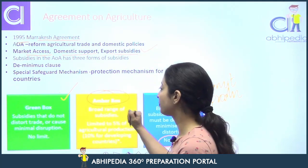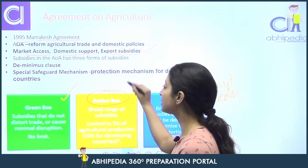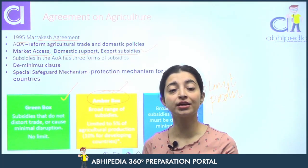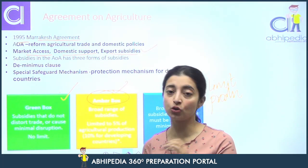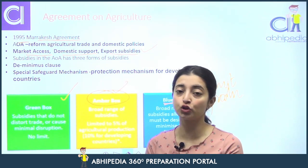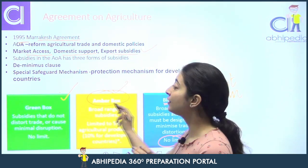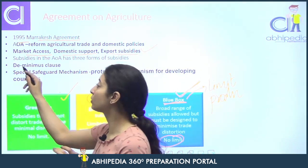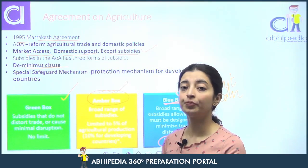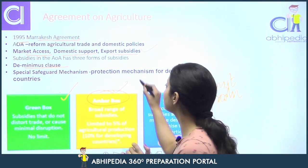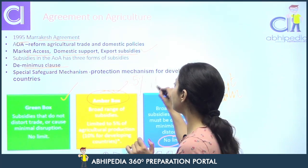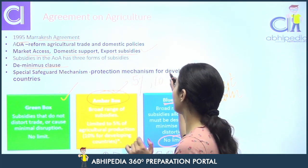Amber box subsidies kaunsi hoti hain? Amber box subsidies are those subsidies which are considered trade distorting by WTO. Iske under ek de minimis clause hai ki minimal level of amber box subsidies have been allowed: 5% allowed hai developed nations ko, aur 10% allowed hai developing nations ko.